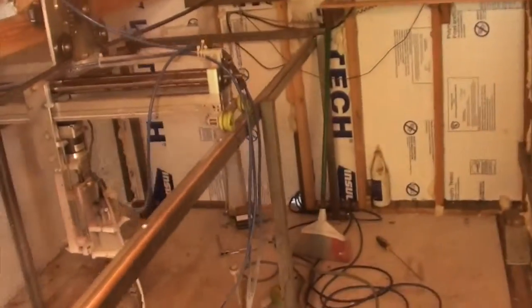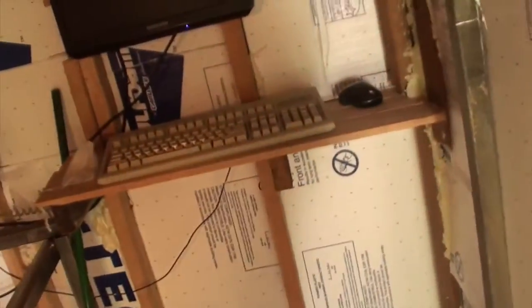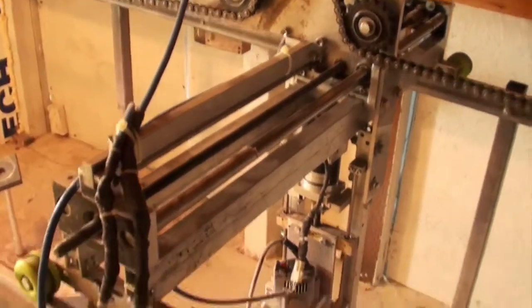And here we are inside the shed. It's insulated so I can heat it in the winter and cool it in the summer. Here's the LCD screen and keyboard for the computer. So let's take a look at the CNC mill.